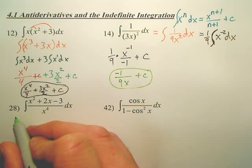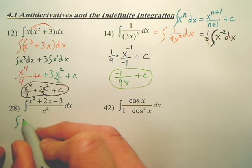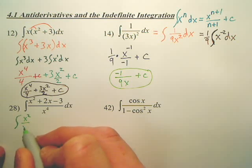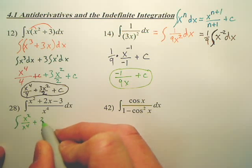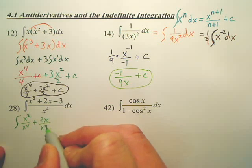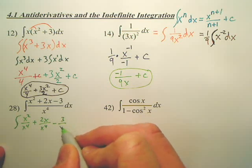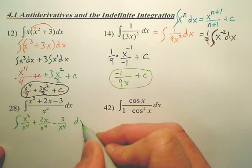Yes. I'm going to rewrite this as x squared over x to the fourth plus 2x over x to the fourth minus 3 over x to the fourth dx.